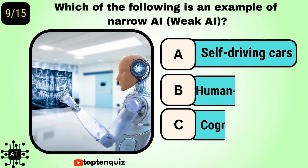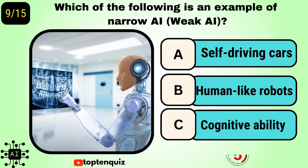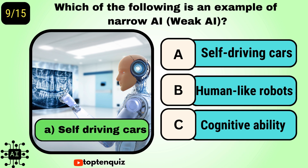Question number 9: Which of the following is an example of narrow AI or weak AI? The answer is self-driving cars.